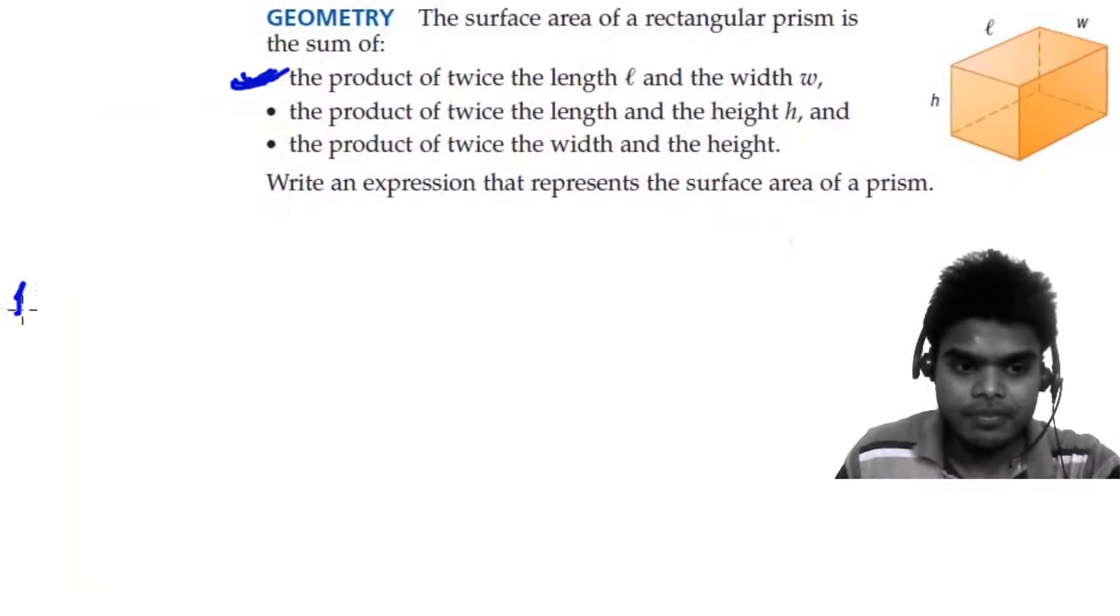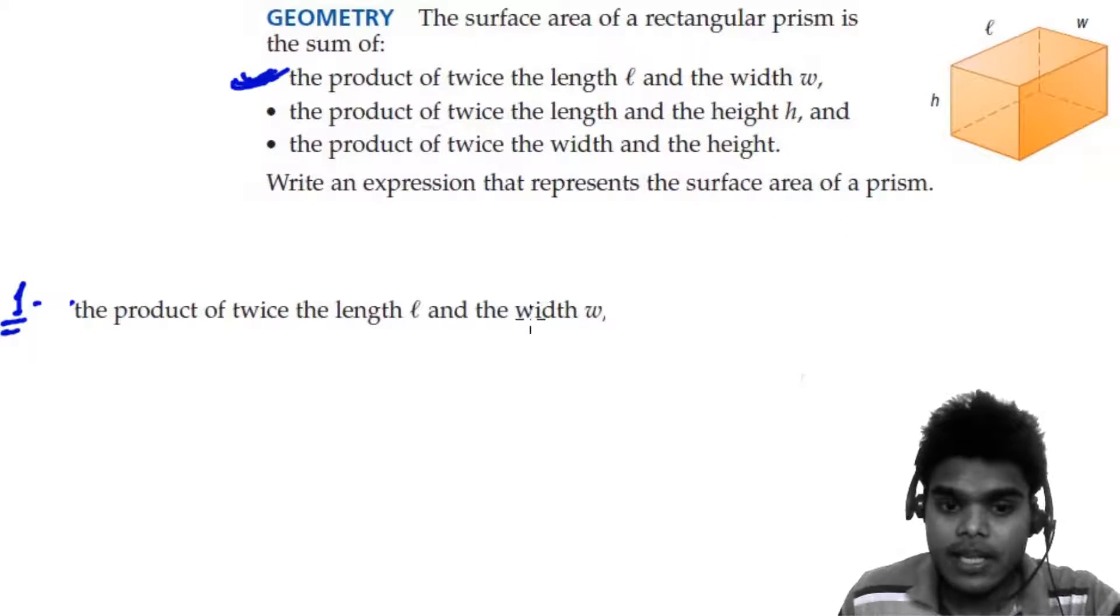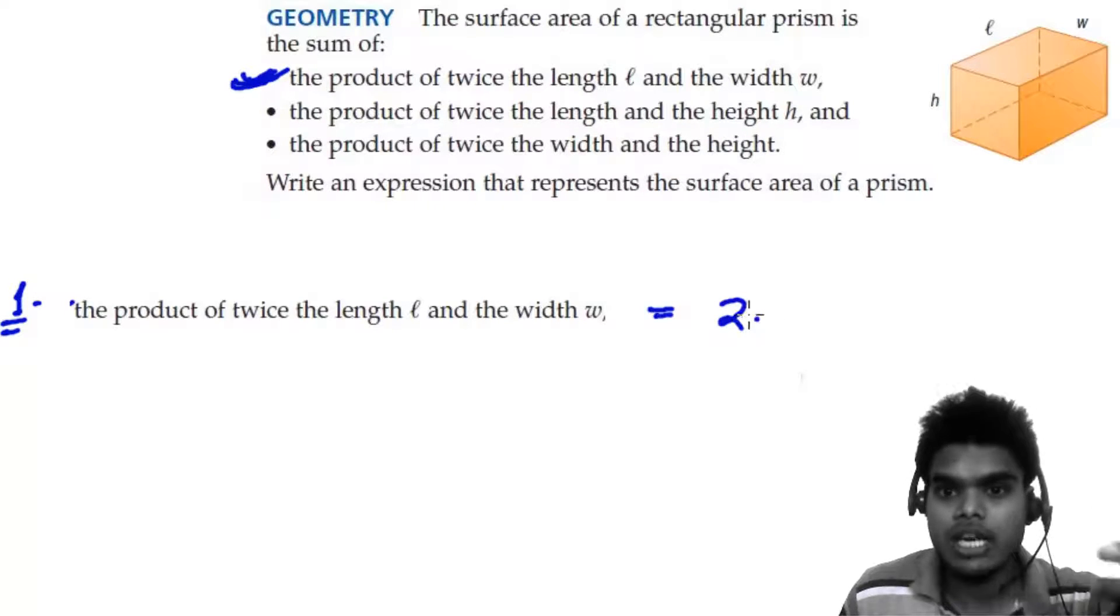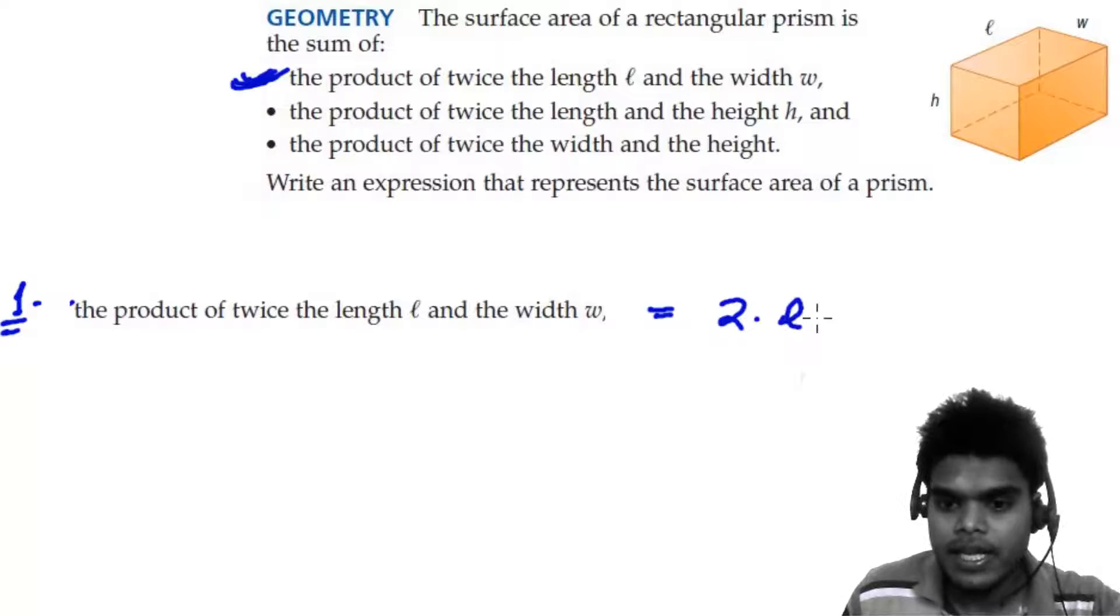So let's deal with the first thing. The product of twice the length and the width is two times - the twice means two times - or two multiply length and width.